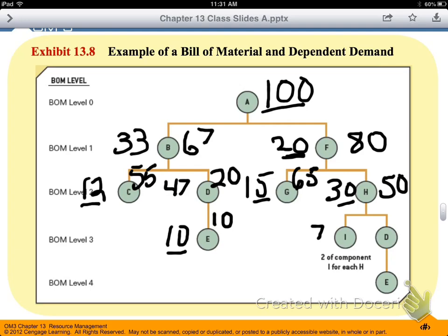So, going further down for I, we've got 7 on hand, but for every H that we make, we need 2 I components. So in essence, we need to cover 100, not just 50. So 100 minus the 7 that we have on hand means that we would need to produce 93 additional I components in order to meet the demand of 50 H components.